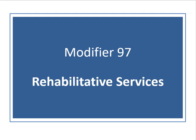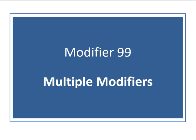Modifier 97 is rehabilitative services, which help an individual keep, get back, or improve skills and functioning for daily living that have been lost or impaired because the person was sick, hurt, or disabled — like a patient who had a stroke. Modifier 99 is multiple modifiers. Under certain circumstances, two or more modifiers may be necessary to completely describe the service. If your payer allows it, modifier 99 should be added to the basic procedure, and then any applicable modifiers may be listed as part of the description of the service.